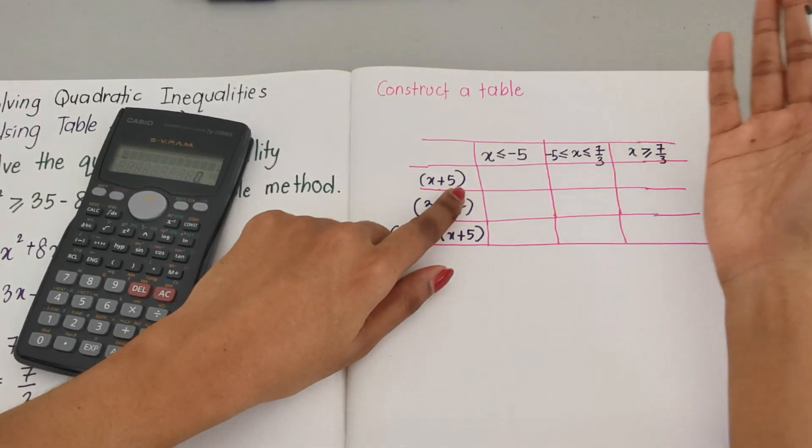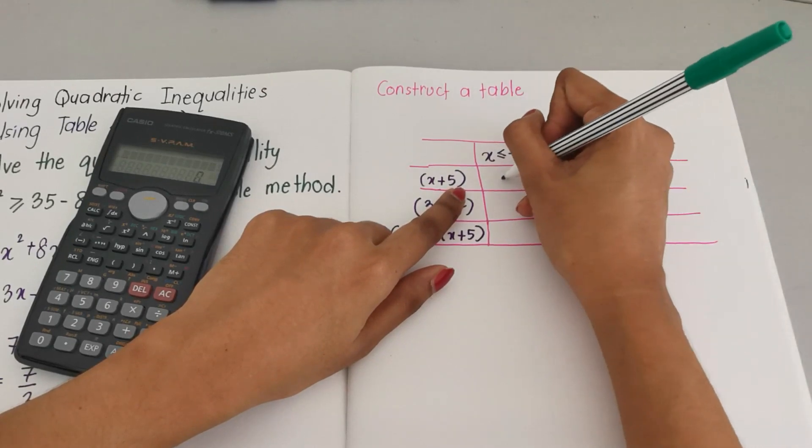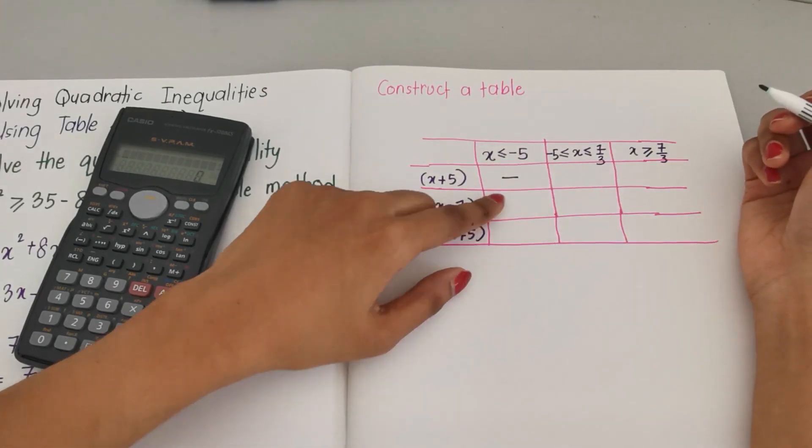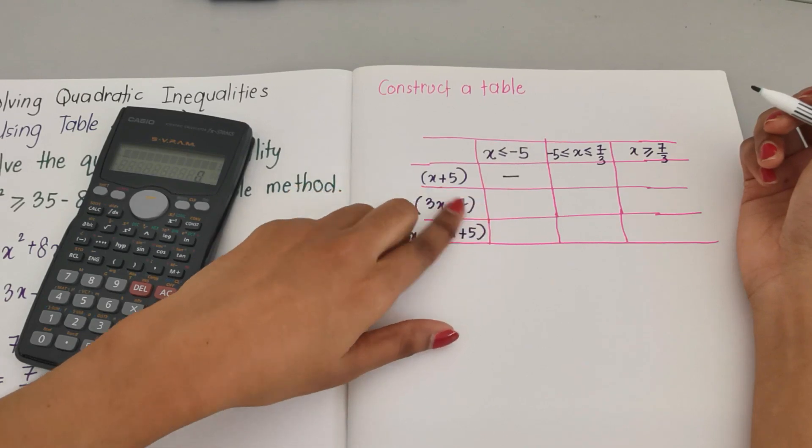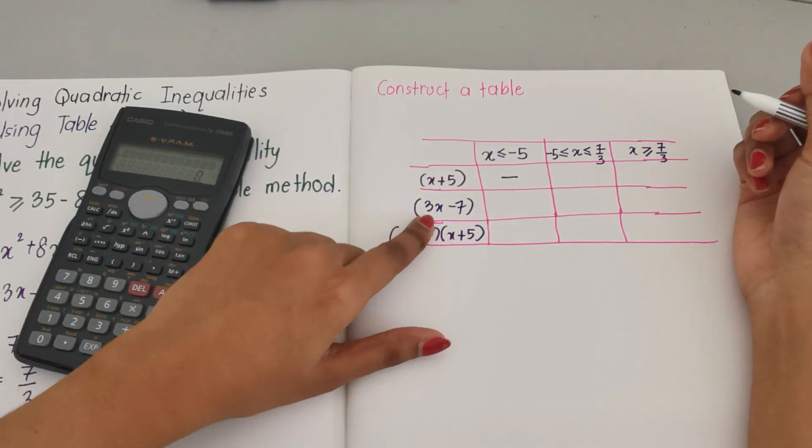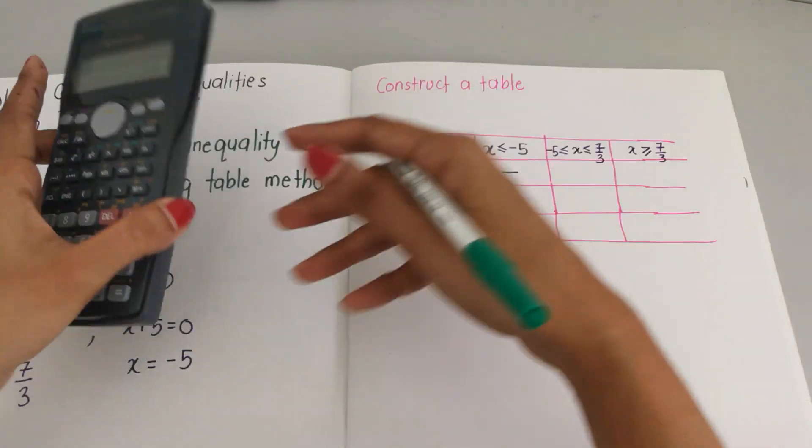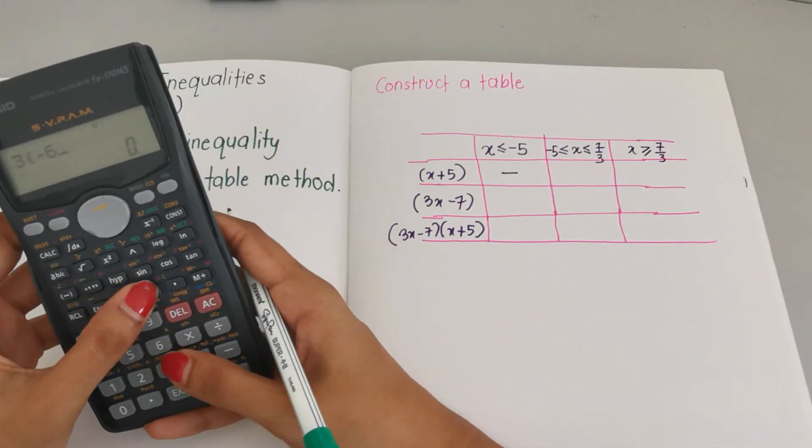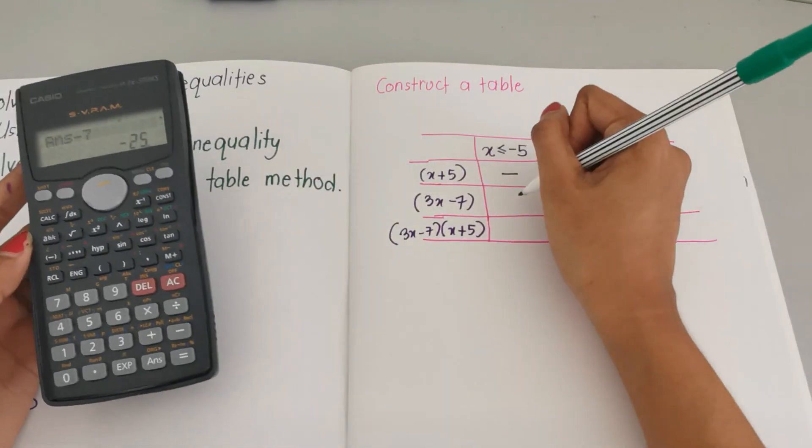I get negative 1, so negative 1 is a negative number, so I'm just going to put negative. Now we also choose negative 6 for this one: 3 times negative 6 minus 7, we get negative 25, so negative 25 is a negative number.